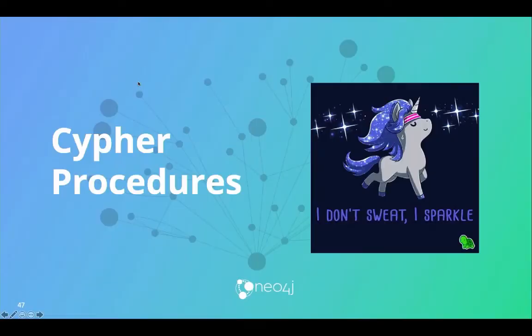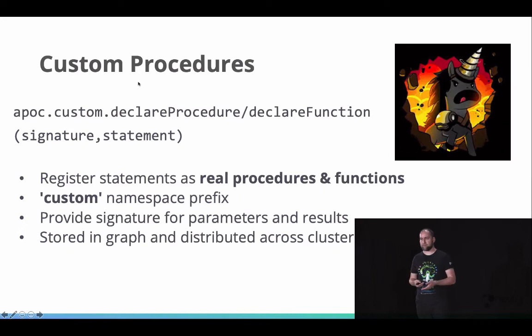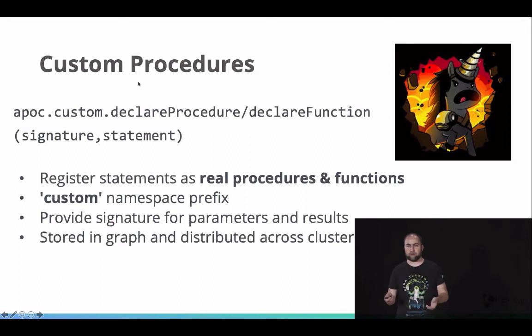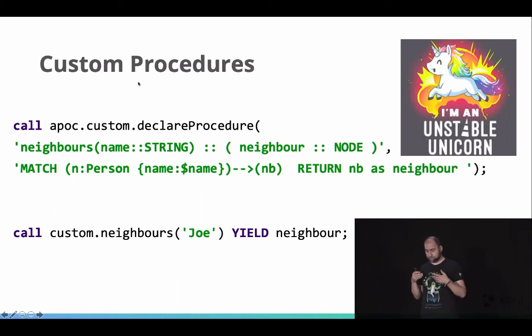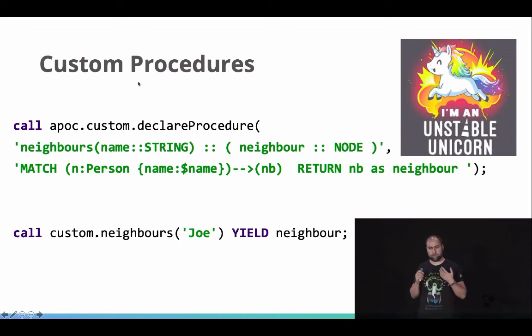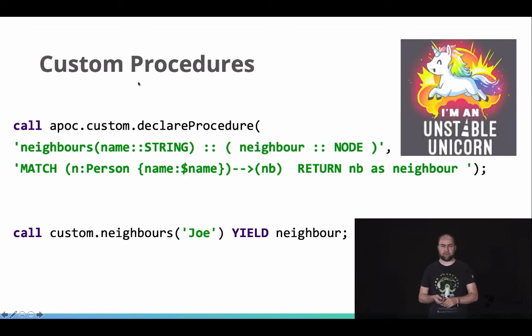Another good example of the power of APOC is Cypher procedures, which allow you to define custom procedures with just a procedure name, some parameters, result types, and a Cypher statement. That Cypher statement becomes a named statement you can call by name without deploying anything to the server or updating a procedure JAR. You can have a complex Cypher statement exposed under a certain name, with arguments and result types defined as part of the declaration. We also want to extend this so other dynamic programming languages can be the implementation of these functions and procedures.